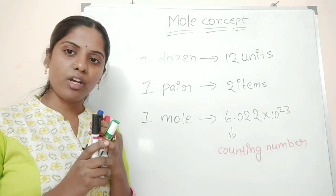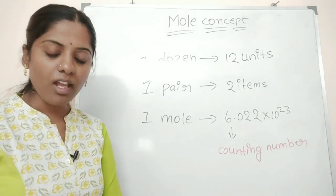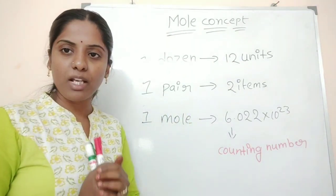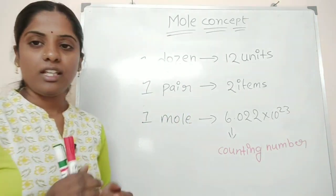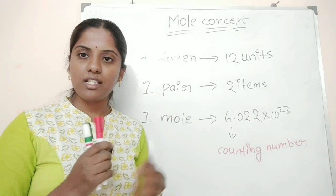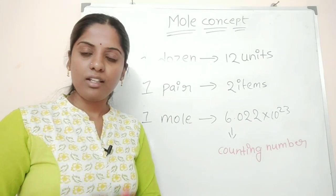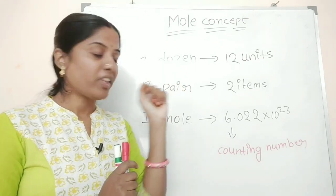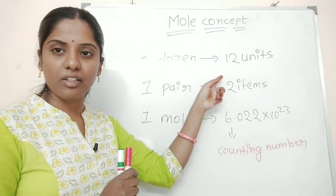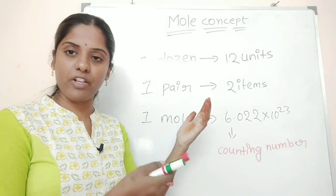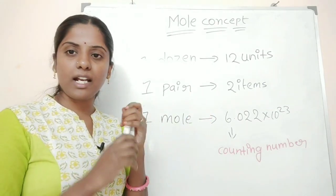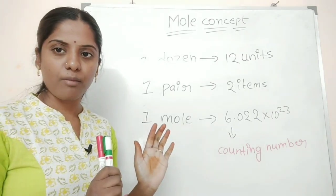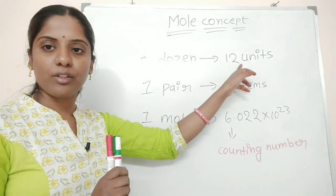So this is like one dozen. It is not only applicable for bananas — one dozen can be pens, notebooks, pencils, or phones. The dozen represents 12 items regardless of the entity. It does not depend on what kind of thing you are counting, but on the number.